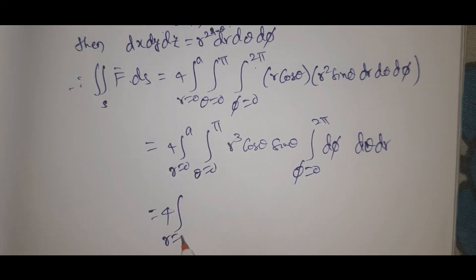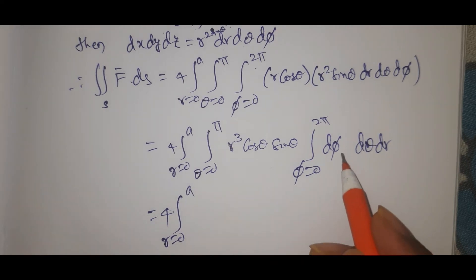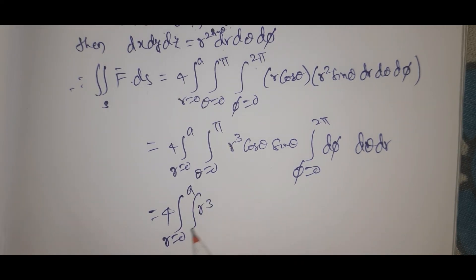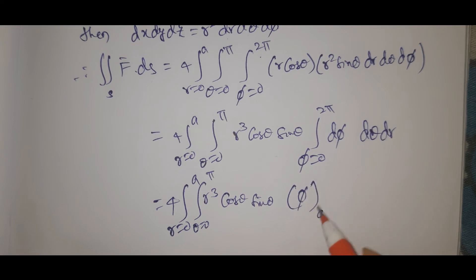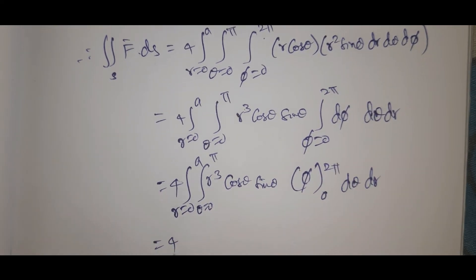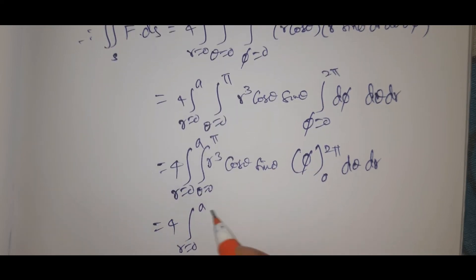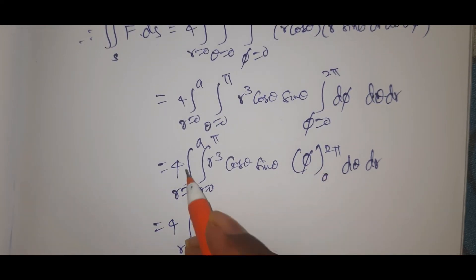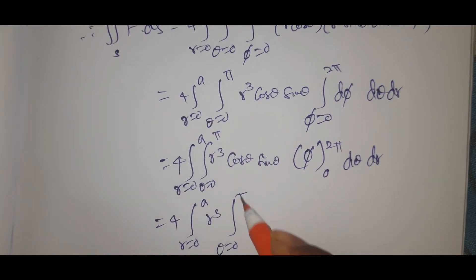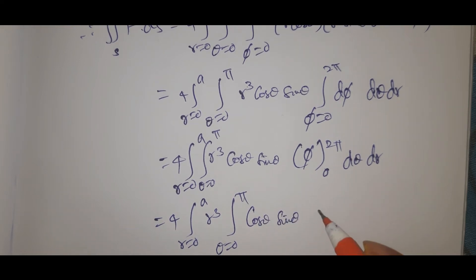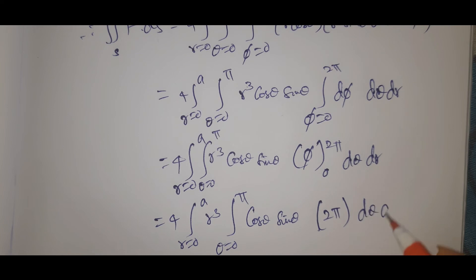That equals 4 integral r = 0 to a, R³, theta = 0 to pi, cos theta sin theta, phi from 0 to 2π, dtheta dr. That equals 4 into r = 0 to a, 2π R³, theta = 0 to pi, cos theta sin theta dtheta dr.